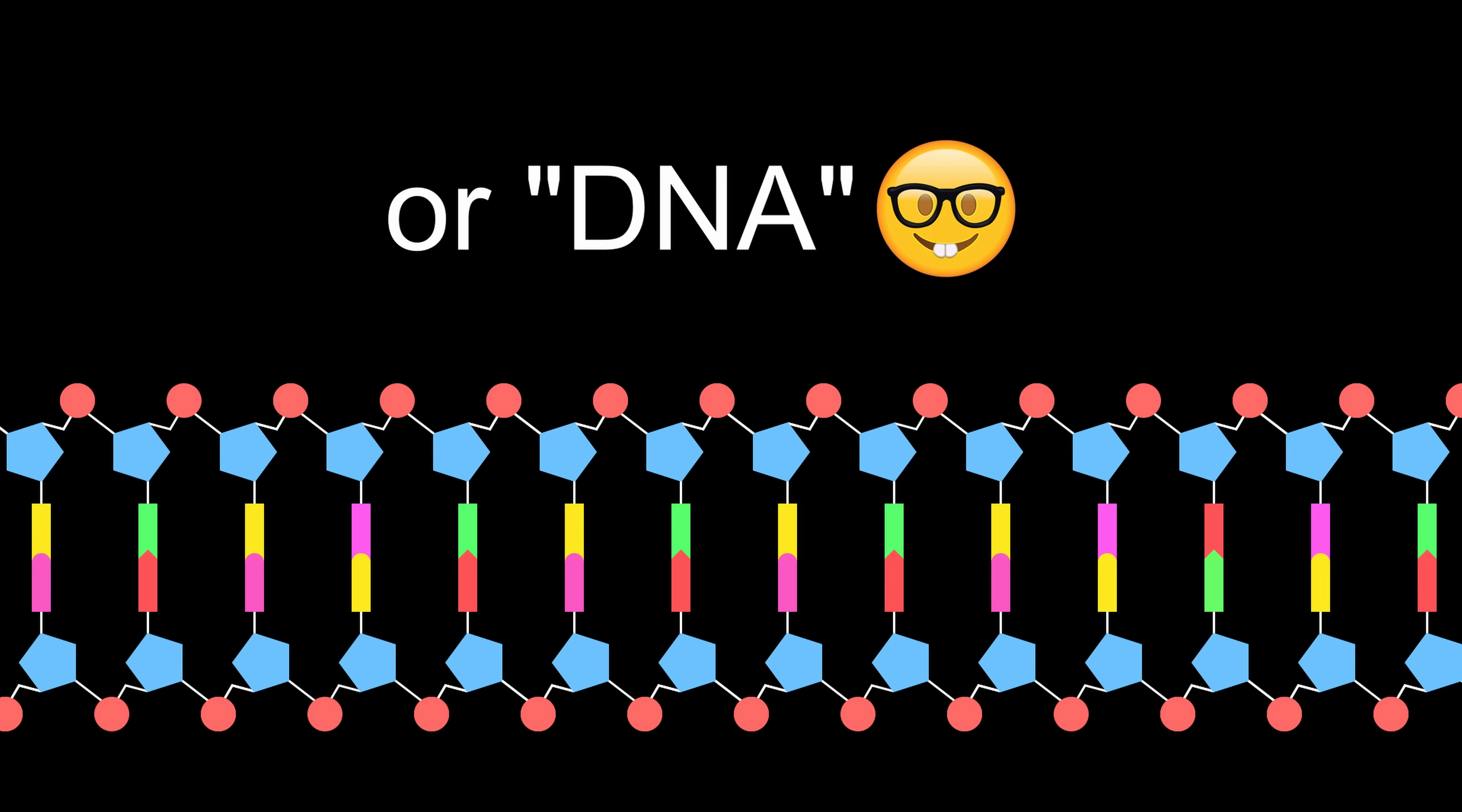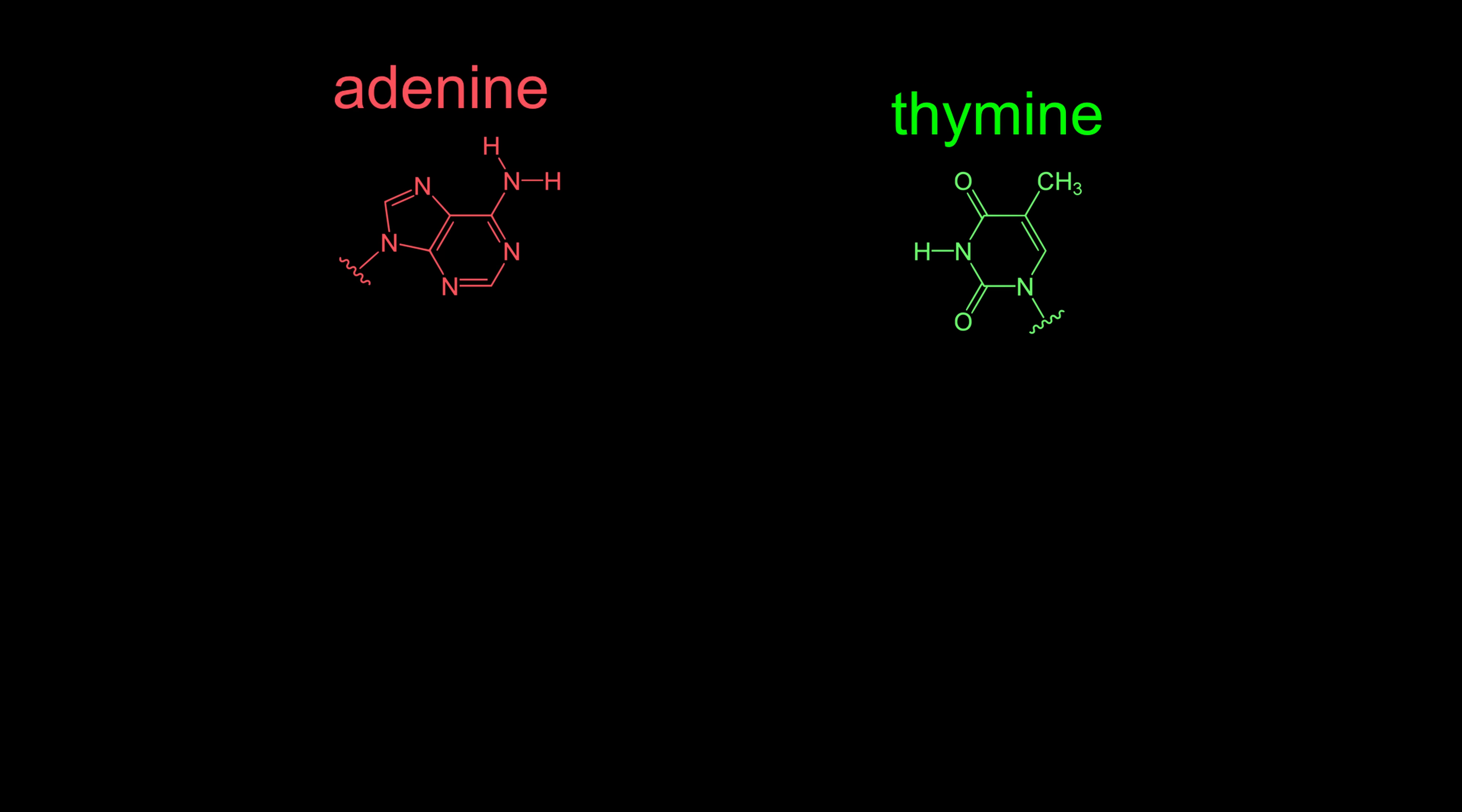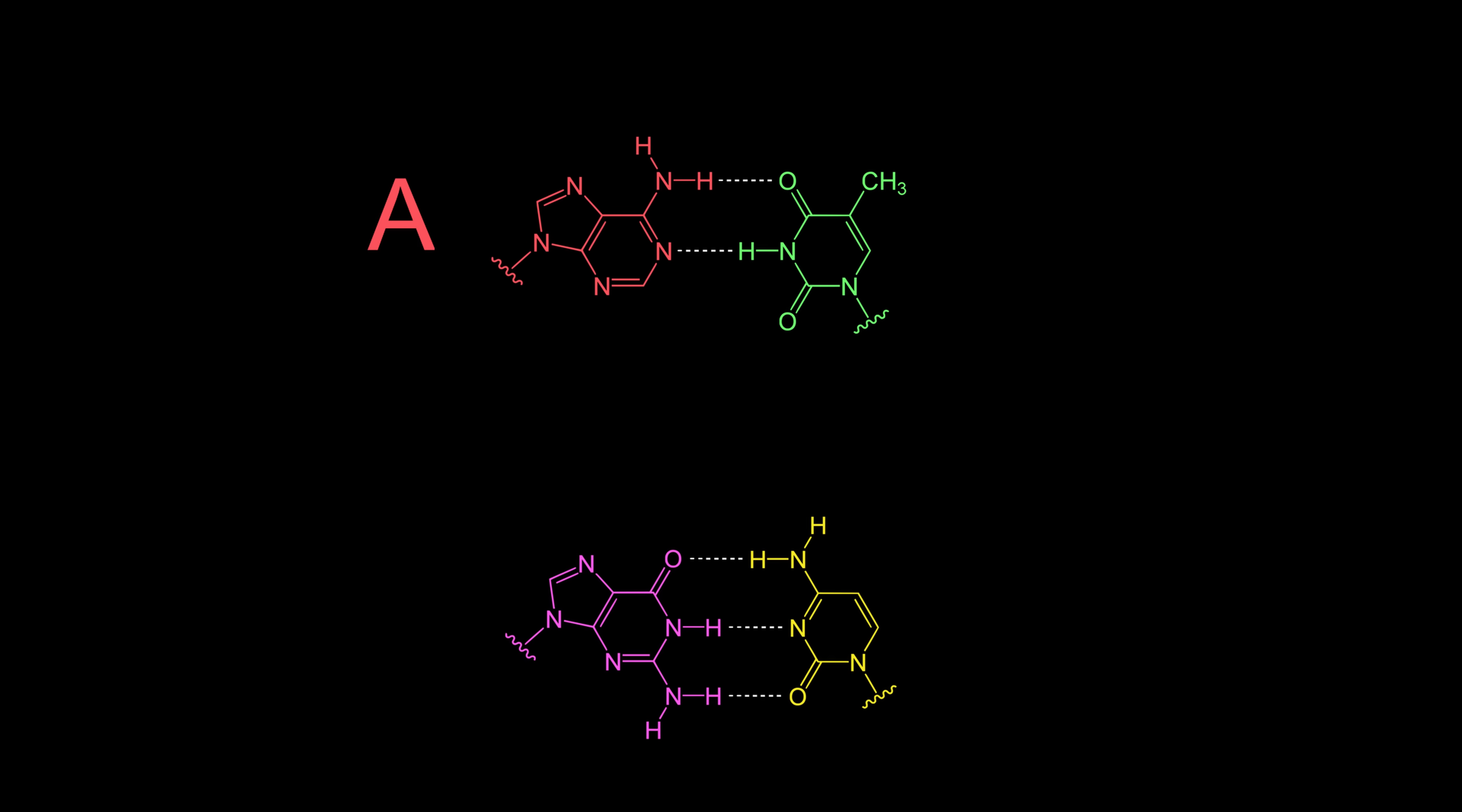Deoxyribonucleic acid, or DNA. It consists of two strands of nucleotides with the sugar and phosphate groups, but the actually important part is the nitrogenous base, which comes in four flavors: adenine, thymine, cytosine, and guanine. These bases can form base pairs through hydrogen bonds, where adenine goes with thymine and cytosine goes with guanine.